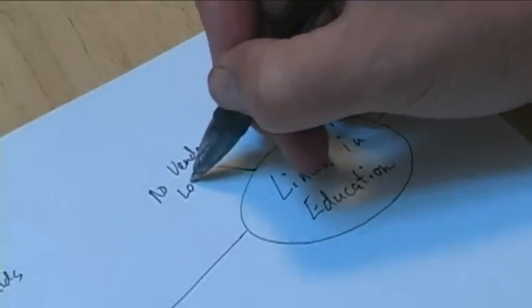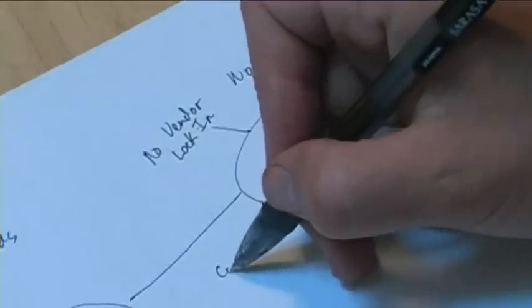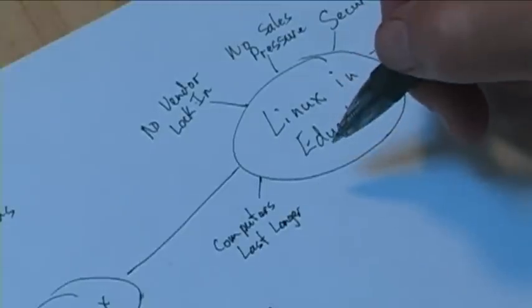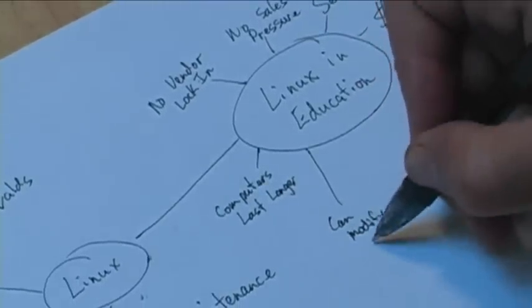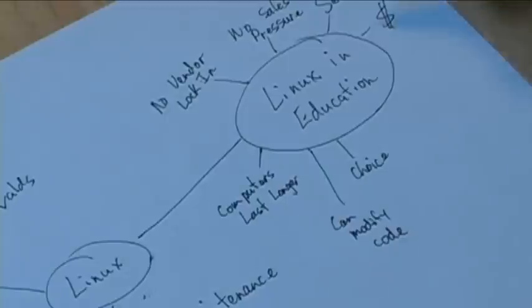You also don't have something called vendor lock-in. Maybe I'll find a video to explain that. Here's a diagram created by a friend of mine representing my local network. To update it, because the file format is closed, I would need to buy a copy of Visio and a copy of Windows just to make changes — that's vendor lock-in. Computers running Linux last longer because Linux doesn't demand as much from hardware. With Linux you can modify the code, which you can't do with XP, Vista, or even Mac, giving you way more choice and freedom.